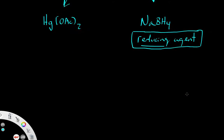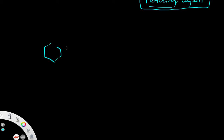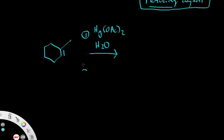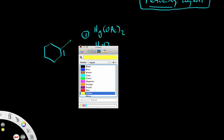Now let's show a chemical reaction. We'll use an alkene with a pi bond. The first step involves mercury(II) acetate with water, and the second step involves sodium borohydride. Steps one and two indicate we treat this reaction sequentially — we are not adding everything all at once.